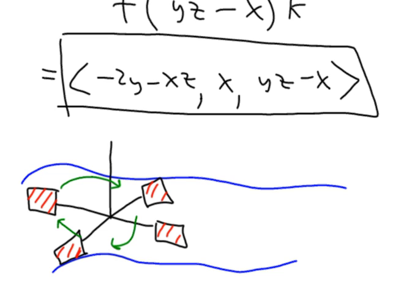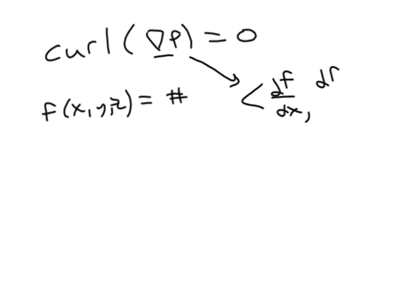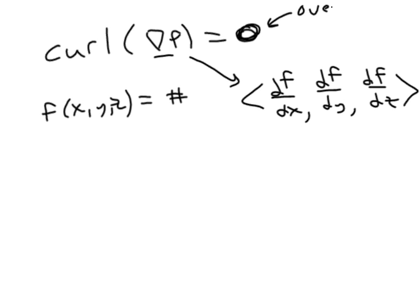Here's a fun fact about curl: the curl of the gradient of f is equal to the zero vector. Here f is some scalar function f(x, y, z) that returns a single value, not a vector. The gradient of such a scalar function is (∂f/∂x, ∂f/∂y, ∂f/∂z). The claim is that if you take the curl of this gradient, you get the bold zero vector — not the number zero, but the zero vector.